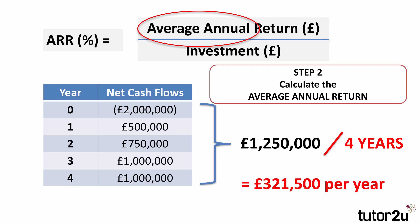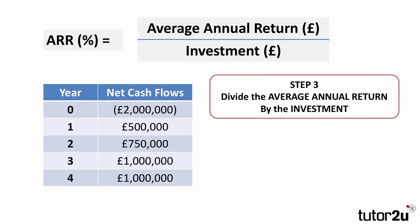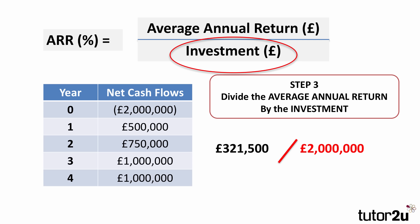We're almost there with ARR. We need to do the final step, which is to divide our average annual return by the investment. Our average annual return was £312,500, and we divide that by the investment of £2 million. Don't forget, with ARR we need to express that as a percentage — so we do that division: 312,500 divided by 2 million, times by 100 to express it as a percentage.